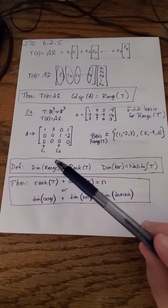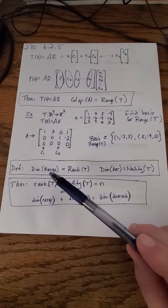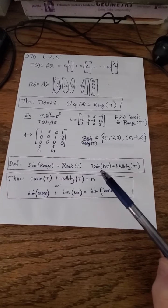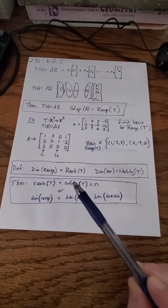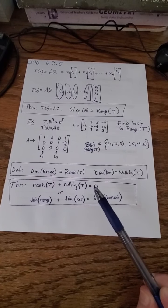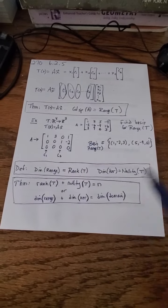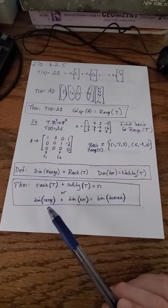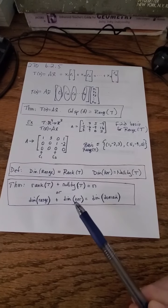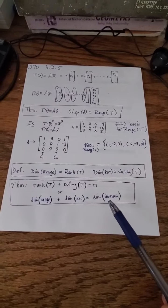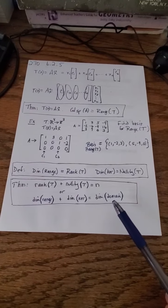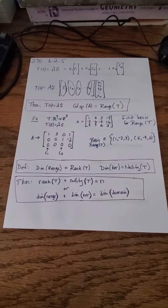We can now define the dimension of the range of a linear transformation is called the rank of T. The dimension of the kernel of a linear transformation is called the nullity of T. And now we have a theorem: rank T plus nullity T equals n. Very similar to a theorem we had previously. Or, the dimension of the range of a linear transformation plus the dimension of the kernel of the linear transformation is equal to the dimension of the domain—that's the dimension of the vector space V.